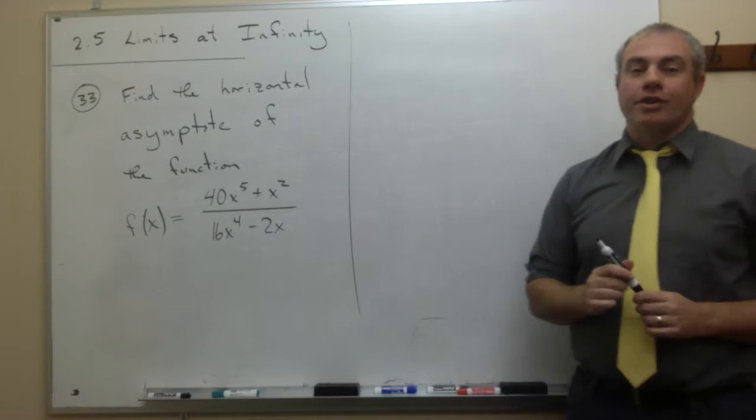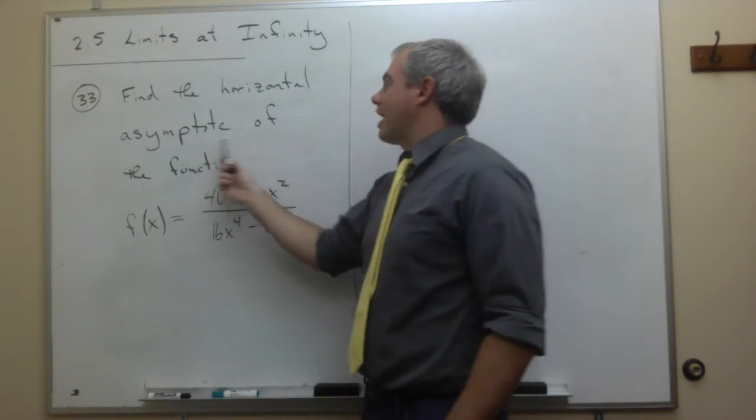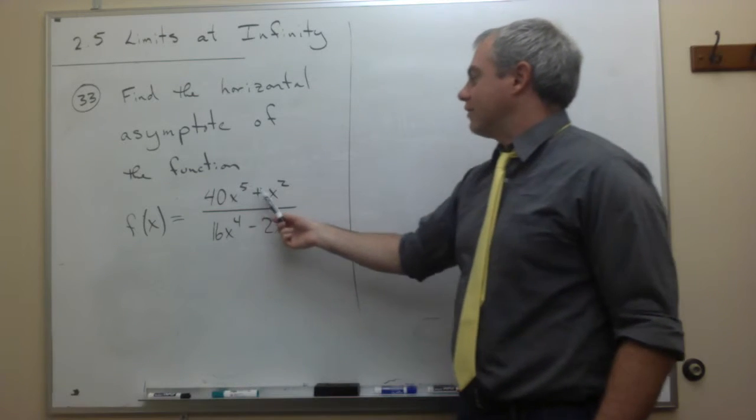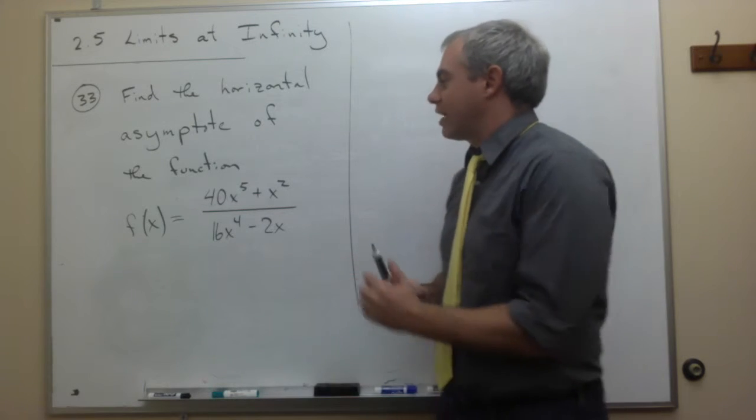Now let's look at problem number 33. In problem 33 we want to find the horizontal asymptote of the function f of x equals 40x to the fifth plus x squared divided by 16x to the fourth minus 2x.